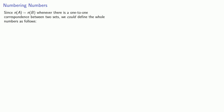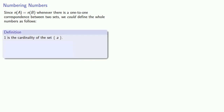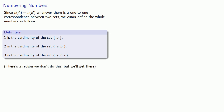And this actually allows us to define numbers. Since the cardinality of A equals the cardinality of B whenever there is a one-to-one correspondence between two sets, we could define the whole numbers as follows: one is the cardinality of this set, two is the cardinality of this set, three is the cardinality of this set. Again, we could define the whole numbers this way, but there's a reason we don't — and we'll get there.